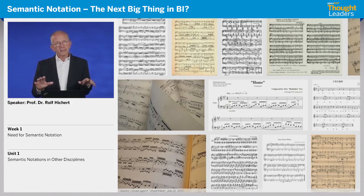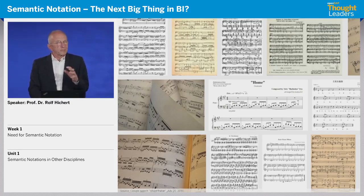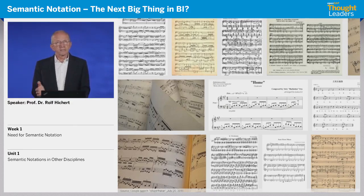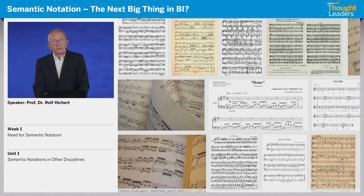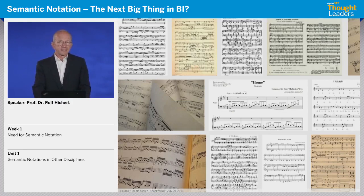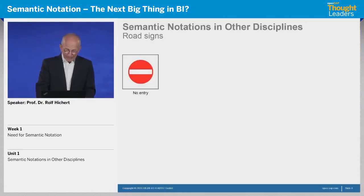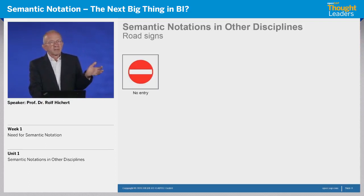We will break it down into ten units. The first week we will cover the different aspects of meaning, measures, notation concepts, and the pros, cons, and benefits. The next week we will touch other chapters of business communications such as clear messaging, well-structured storylines, and so forth. I would like to start with the first unit, which looks at semantic notation concepts in other disciplines — such as electricity, architecture, and music.